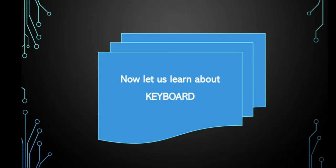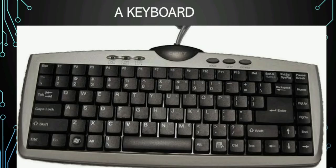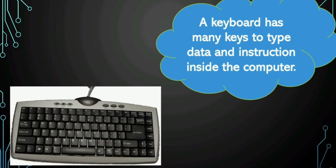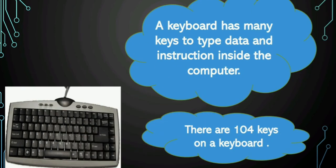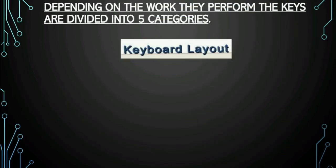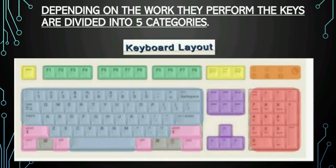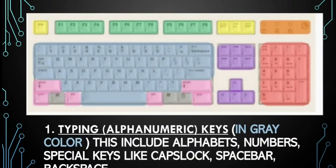Let us now study about the third main part of the computer, that is keyboard. A keyboard has many keys to type data and instructions into the computer. A standard keyboard has 104 keys, and depending upon the work they perform, the keys are divided into five categories. Here I have color-coded the keyboard for better understanding. First are typing or alphanumeric keys, shown in grey. These keys include alphabets, numbers, and special keys like spacebar and caps lock.